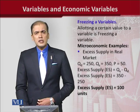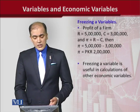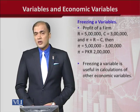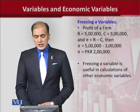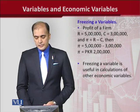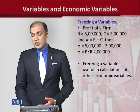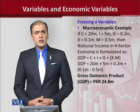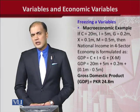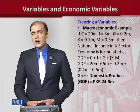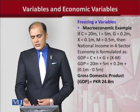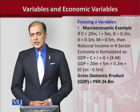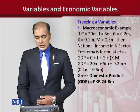As you can see, it's 100 units in this hypothetical example. Similarly, profit of a firm can be calculated by the difference of revenue and costs — by freezing these values we have been able to find the profit. You are all familiar with the equation Y = C + I + G + X - M, the national income determination in a four-sector economy. We can plug in the values and get the final result — the national income in a four-sector economy.